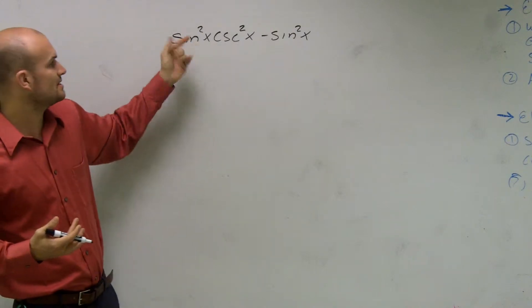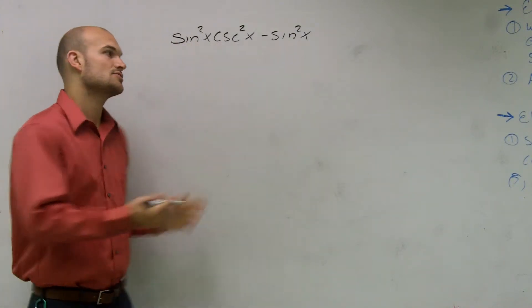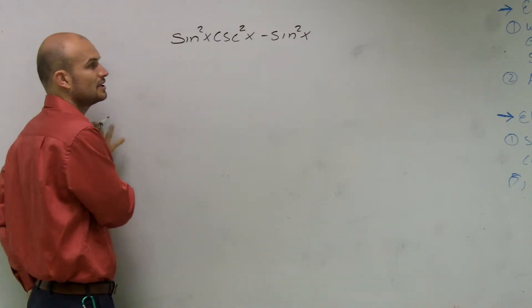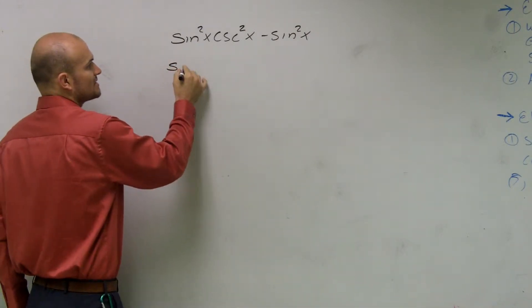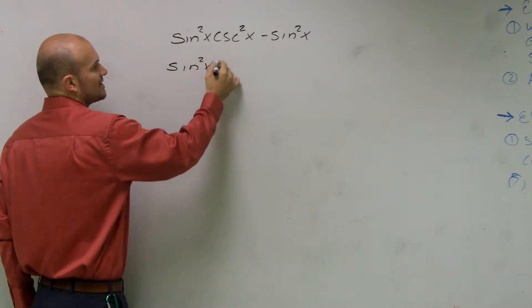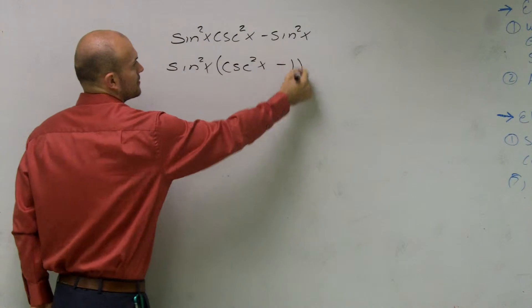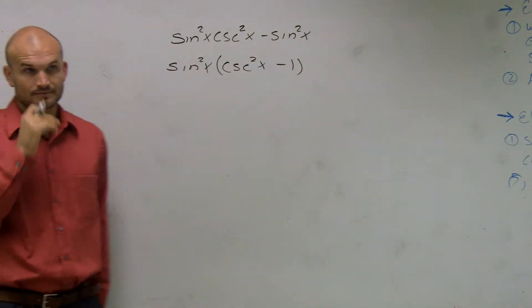Obviously you guys can see that both of these terms share a sine squared. So I'm going to factor out a sine squared, just like you can factor out any other easier expression. When I factor out sine squared of x, what I'm left with is cosecant squared of x minus 1.